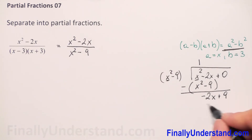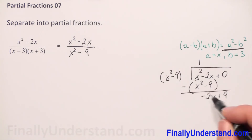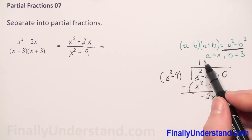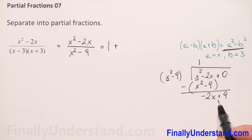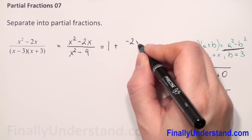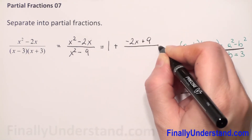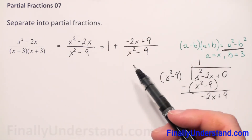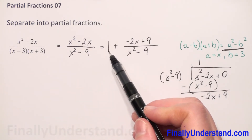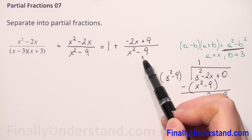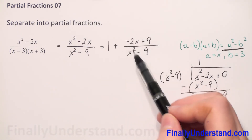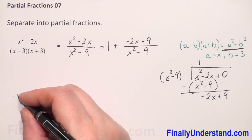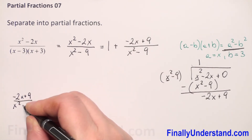Because the power of our remainder is less than the power of our divisor, we don't do division anymore. We can rewrite that this is equal 1 plus, and our remainder is negative 2x plus 9, written over whatever we have in the denominator, x squared minus 9. So now when we have to rewrite our fraction to partial fractions, we have to copy this 1 and only change this remaining fraction to partial fractions.